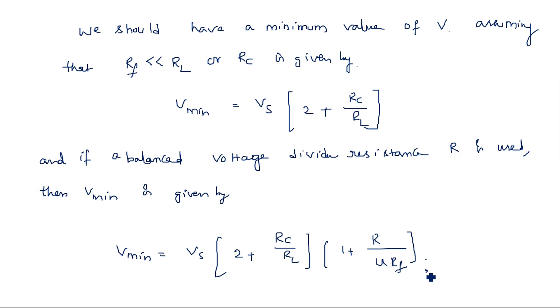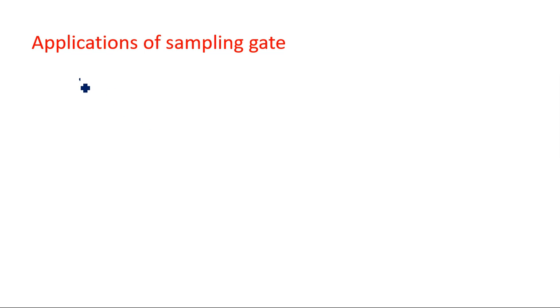Now let us look at the applications of sampling gates, which is very important. The main purpose of a sampling gate is to send a sample of the input signal to the output whenever a gating pulse occurs. One common application is sampling oscilloscopes in CROs, where samples of the input signal are sent to the output, and the sampling gate is used for that purpose.